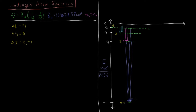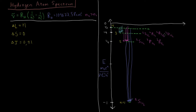At n equals 1, our only term symbol is doublet S one-half: L is 0, the spin is one-half, there's one unpaired electron so the multiplicity is 2, and the only value of J is one-half — from the previous video on spin-orbit coupling. For n equals 2, we have more possibilities: the same doublet S one-half, and also doublet P one-half and doublet P three-halves, for J equals one-half and J equals three-halves. For n equals 3, we have doublet S one-half, doublet P one-half, doublet P three-halves, and additionally D orbitals, giving us doublet D five-halves and doublet D three-halves.